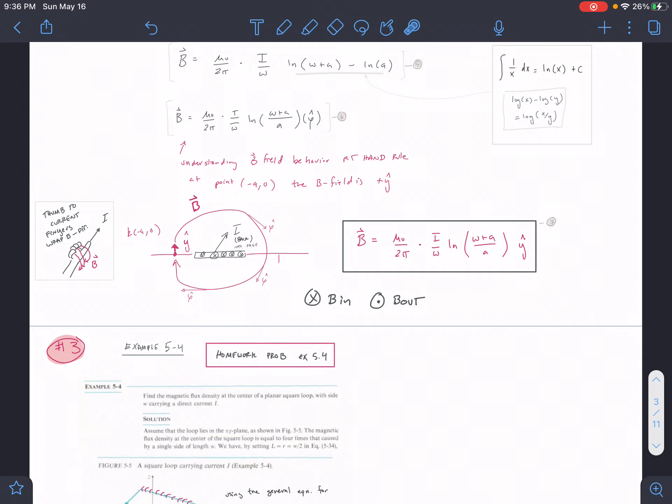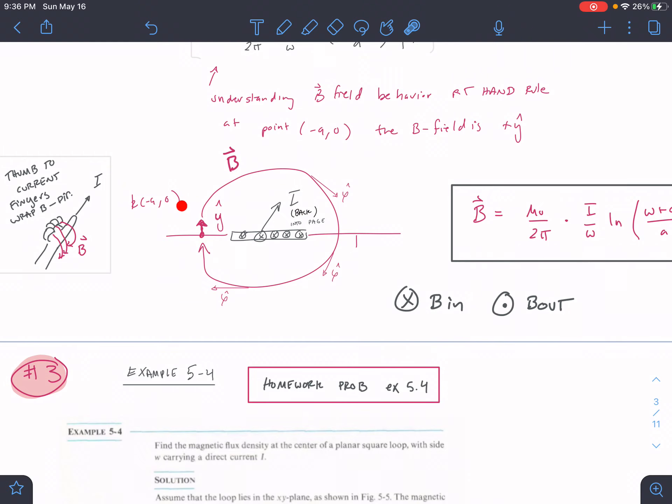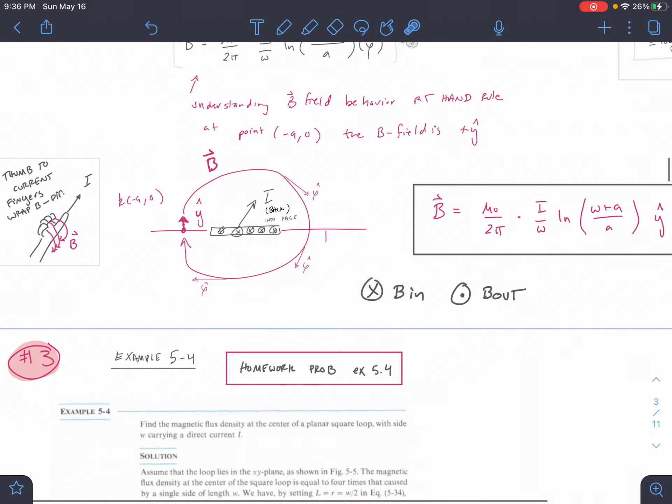We are at this point here, right, we're at this negative a comma zero. When we are looking for our vector direction for our B field at a point, we need to understand how this point is experiencing the B field force.